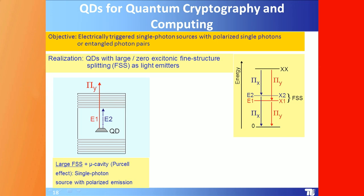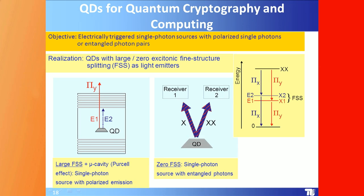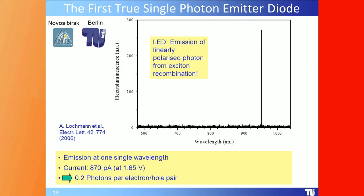If you have zero fine structure splitting — which can be achieved by designing the correct quantum dot size — you have either a single photon source or a source of entangled photons. The first realization was in a collaboration with the Russian Academy of Sciences in Novosibirsk: they fabricated very low-density quantum dots and we made an LED from them — exactly ten years ago.